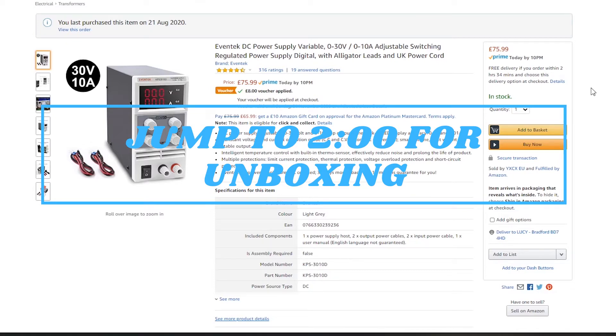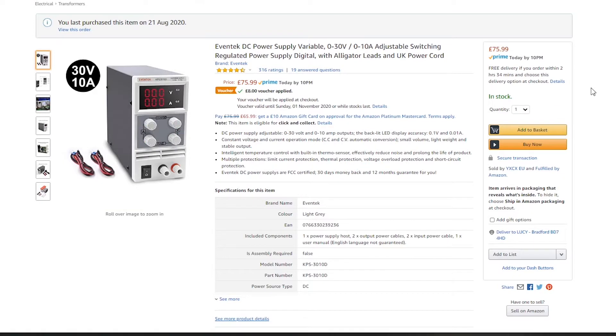Hi everyone, I just bought this new power supply. It's an Evantech DC variable power supply. Apparently output up to 30 volts and 10 amps, which is amazing if it actually can.